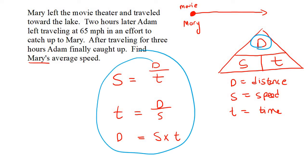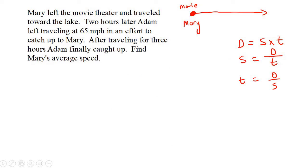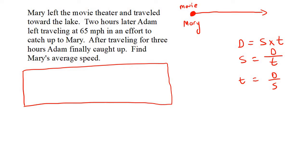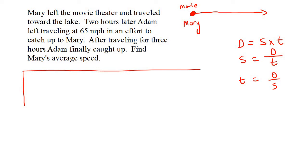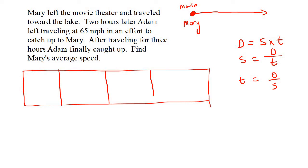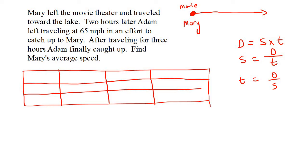Please go ahead and write these formulas down, and then we'll carry on. Now, what you're going to do in these distance, speed, time questions is make a table. You're going to make four different columns and three rows. Here you can say 'objects,' then you're going to put distance, speed, and time — it doesn't matter what order. I'm going to do distance, speed, and time.